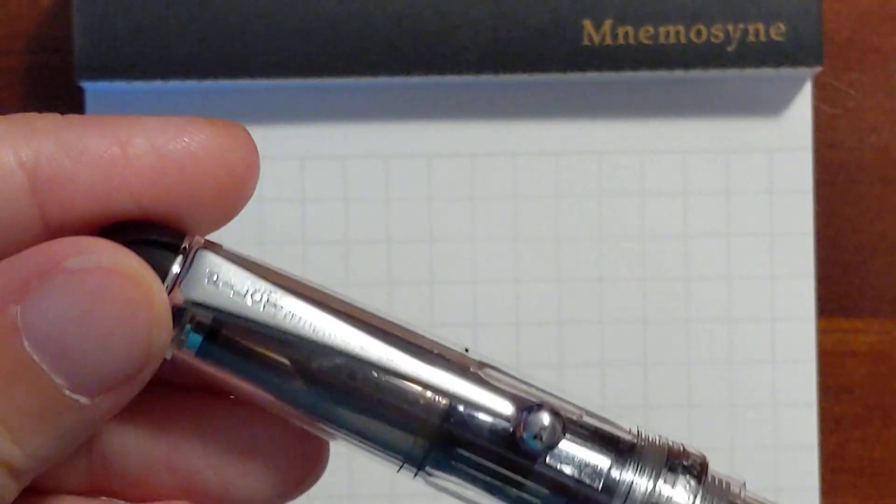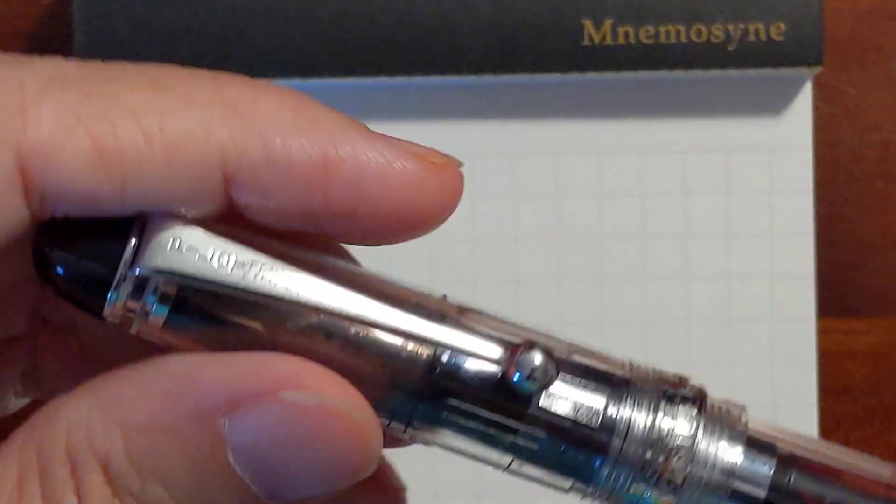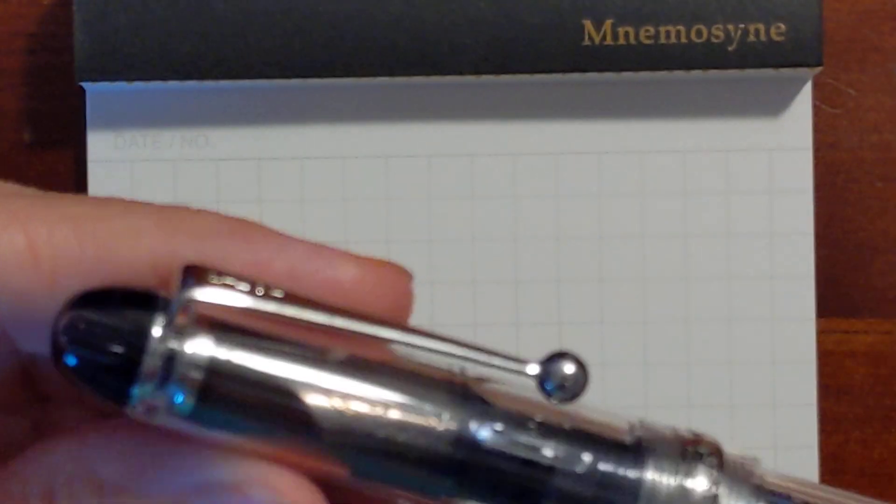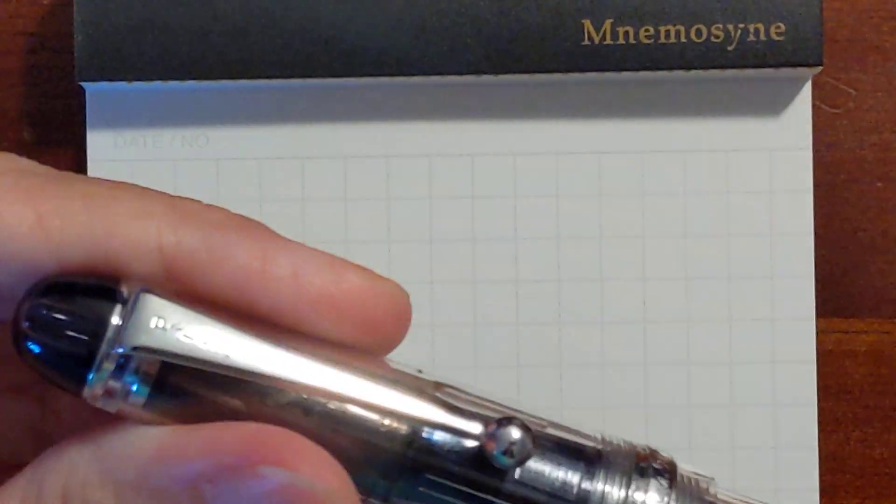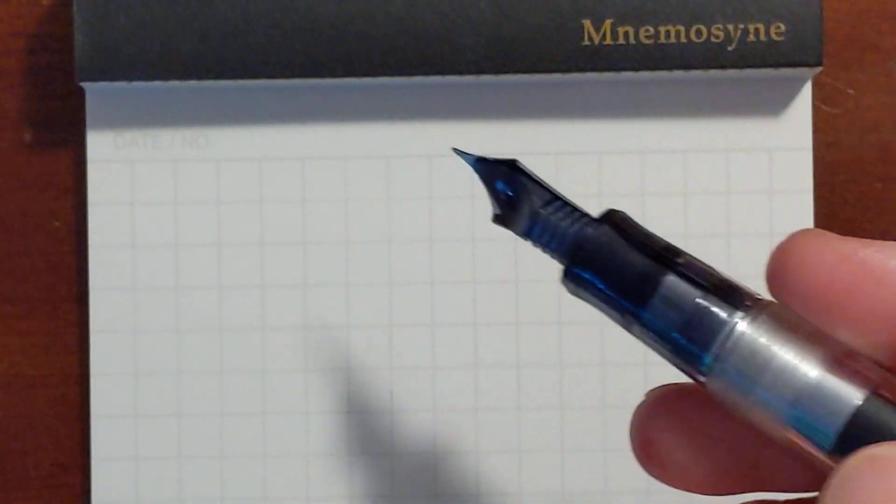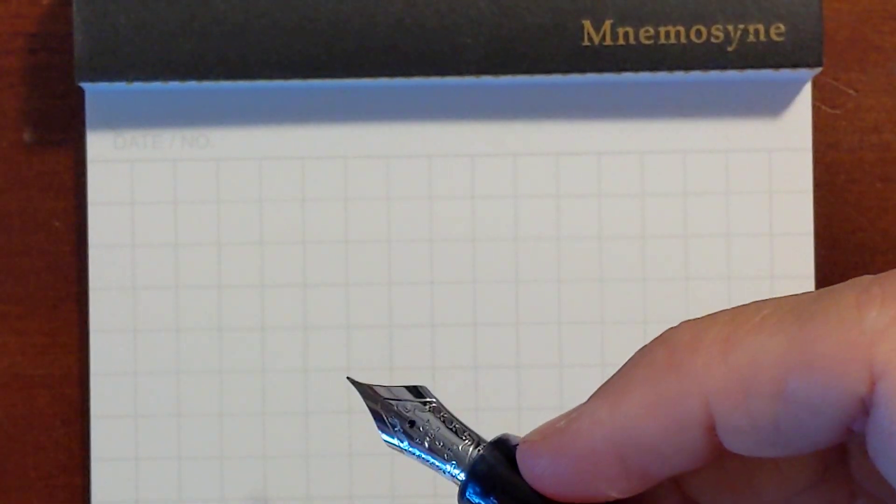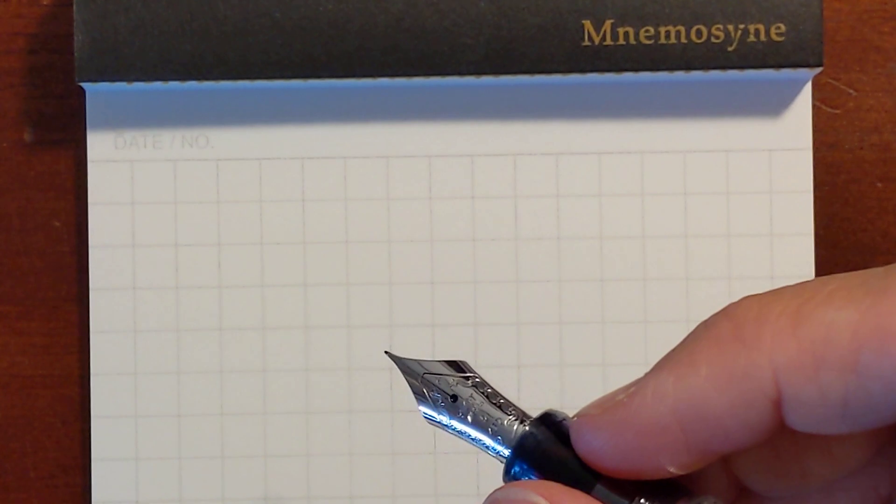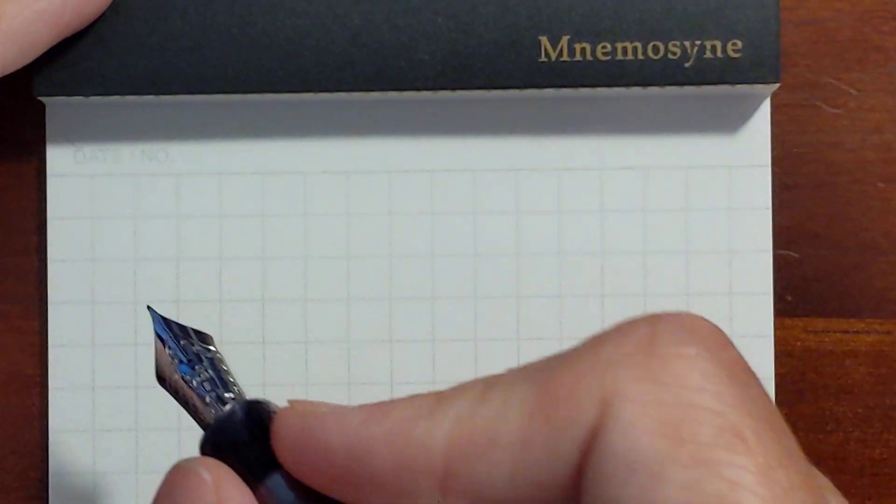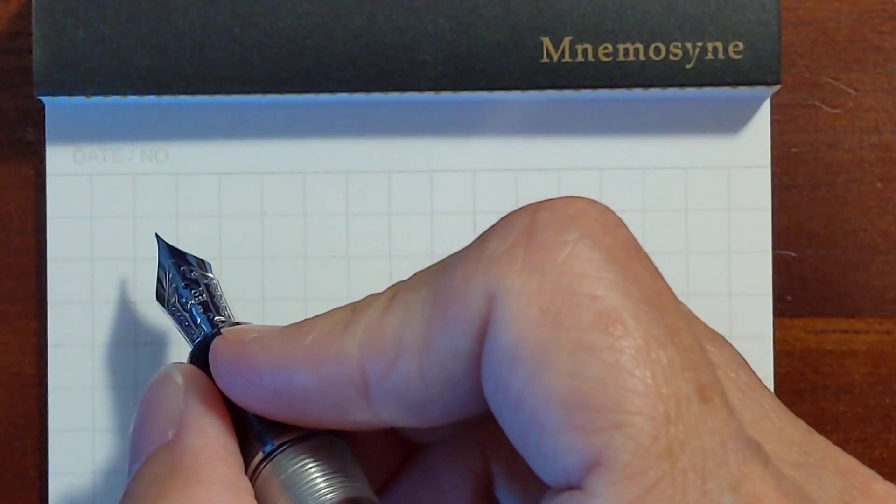Okay the first pen I inked it up with to do a little journaling was my Pilot Custom 74 with a fine nib because this ink looks so nice in a pen that brings out the shading. This is a pen that will do that.